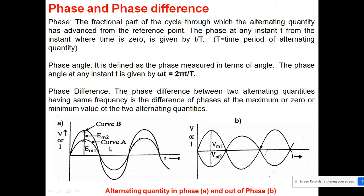The phase difference between two alternating quantities — whether voltage or current — having the same frequency is the difference of phase at the maxima, zero, or minima of the two quantities. When two quantities have no phase difference they are in phase; otherwise they are out of phase. This is the terminology used when solving numerical problems.